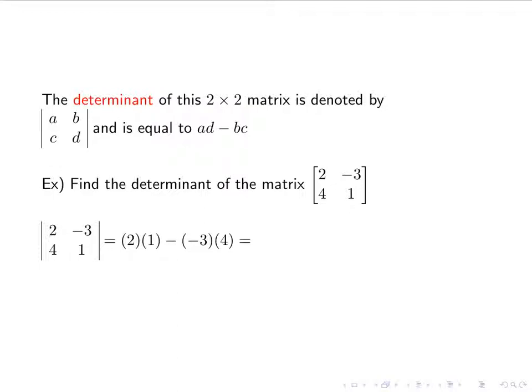We're going to plug it into the formula. AD is 2 times 1, and BC is negative 3 times 4. Remember order of operations: multiplication comes before subtraction. I end up with a double negative, and I get 14.